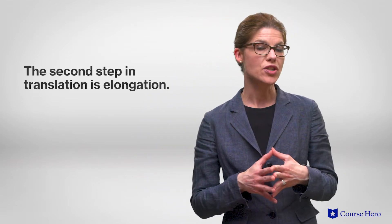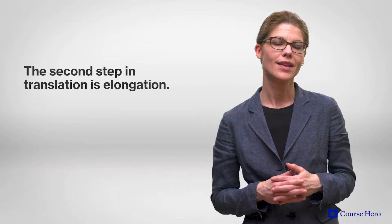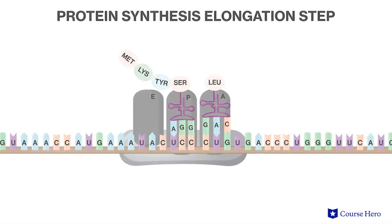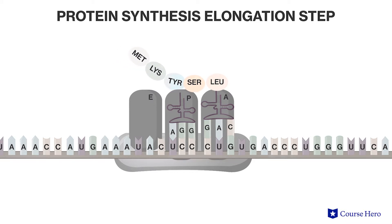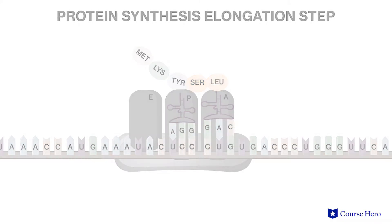The second step of translation is called elongation. An incoming tRNA is brought to the A site, and a peptide bond is formed between the new amino acid in the A site and the growing polypeptide chain in the P site. This moves the polypeptide from the tRNA in the P site and attaches it to the new amino acid in the A site, leaving the tRNA in the P site empty. As the ribosome moves forward, the empty tRNA that was in the P site is moved to the E site, and the tRNA with the growing polypeptide is moved to the P site.